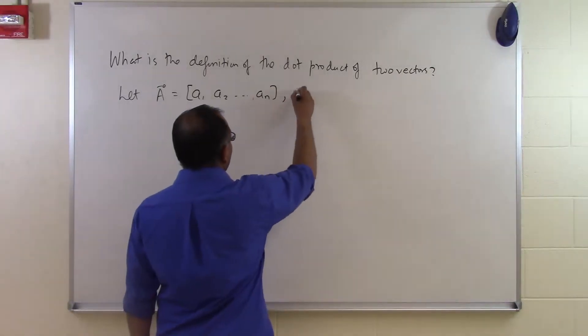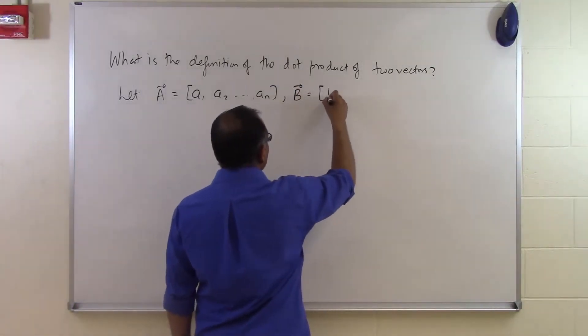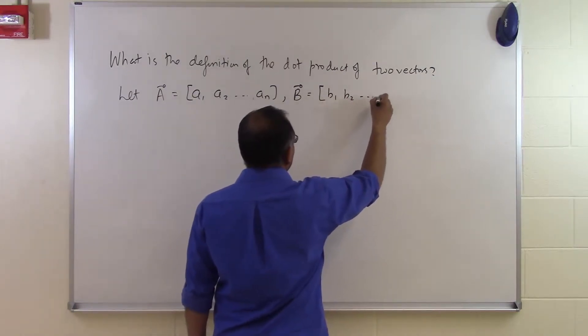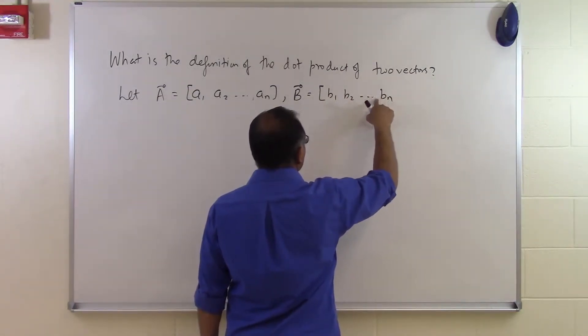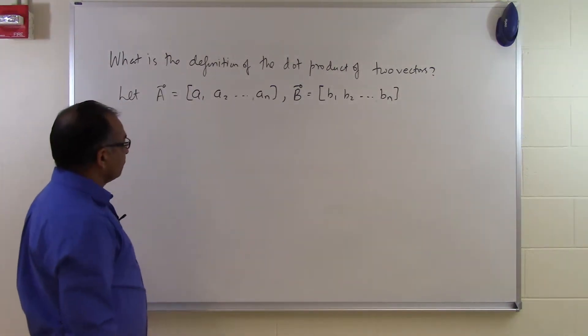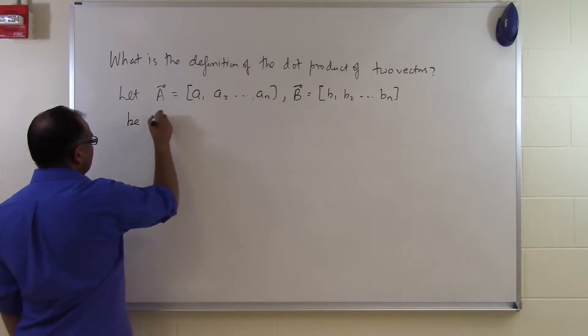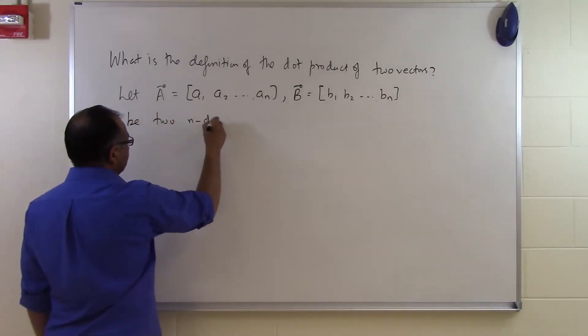And then we have vector B with components b1, b2, up to bn. So vector B also has n components. Let A and B be two n-dimensional vectors.